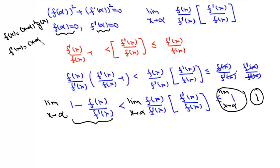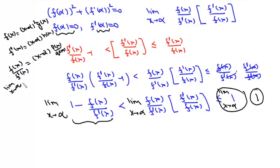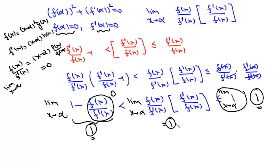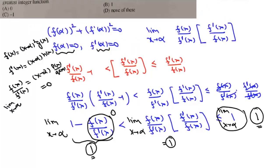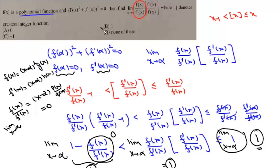Consequently, f'(x) = (x − α) · h(x), so f(x)/f'(x) = (x − α) · [p(x)/q(x)]. Taking the limit as x tends to α, the factor (α − α) = 0, so this limit is 0. Therefore the left-hand side limit is also 1. Since the right-hand side equals 1 and the left-hand side equals 1, by the Sandwich Theorem the limit equals 1 — that is option B.